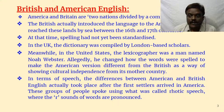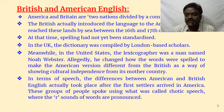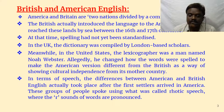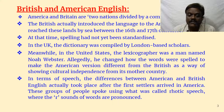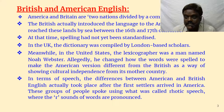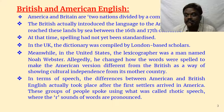In that way, we have got two Englishes simultaneously. In terms of pronunciation, the differences between American and British English actually took place after the first settlers arrived in America. These groups of people spoke using what was called rhotacized or rotic speech — where the R sound of words is pronounced. Whereas in England, Britishers avoided the R sound; R was muted in British English, except if followed by a vowel.